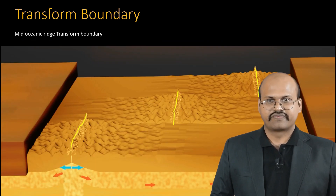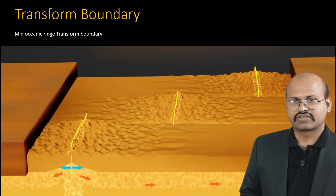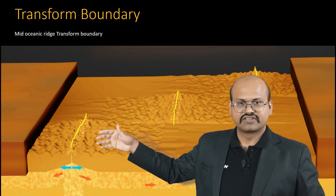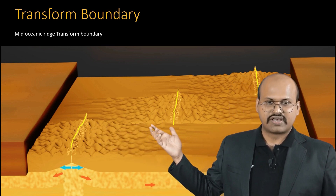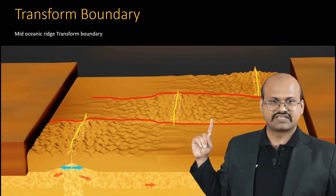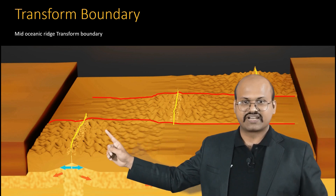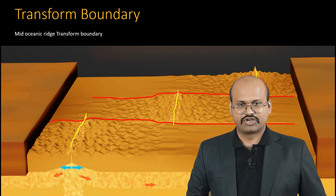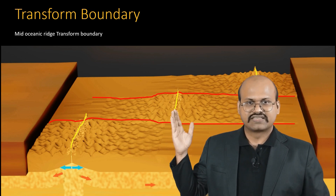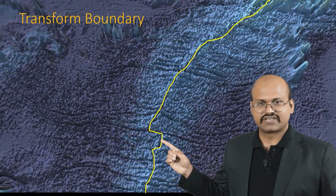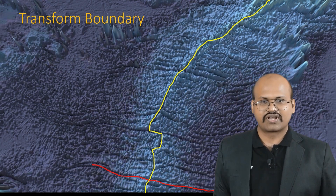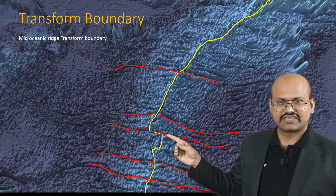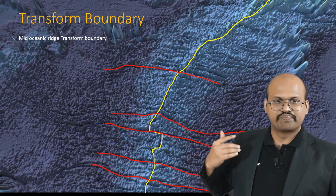There is another type of transform boundary formed along the mid-oceanic ridge. The mid-oceanic ridge, indicated by the yellow line, has transform boundaries — indicated by red lines — running between segments of the ridge. These transform boundaries are found throughout the mid-oceanic ridge, and we can see that there are many such boundaries all across it.